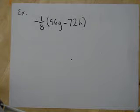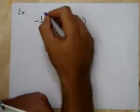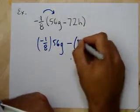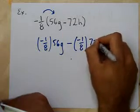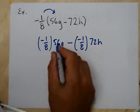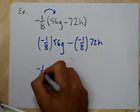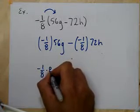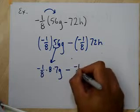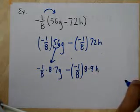We have a couple of problems to work out. We're going to use the distributive property to rewrite this: negative 1/8 times (56g minus 72h). Distributing negative 1/8, we get negative 1/8 times 56g minus negative 1/8 times 72h. We can rewrite 56 as 8 times 7, and 72 as 8 times 9. So we have negative 1/8 times 8 times 7g, minus negative 1/8 times 8 times 9h.